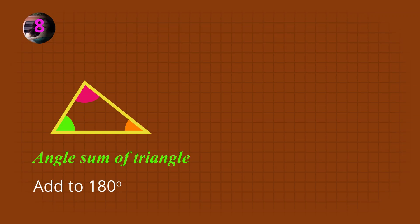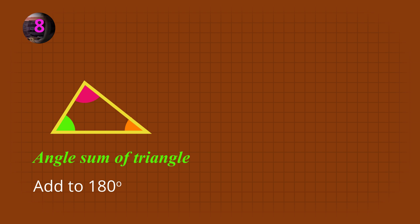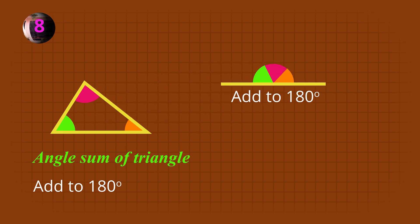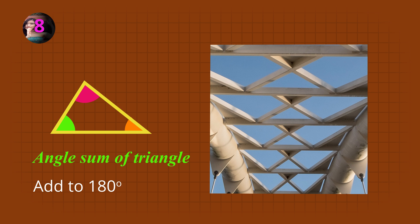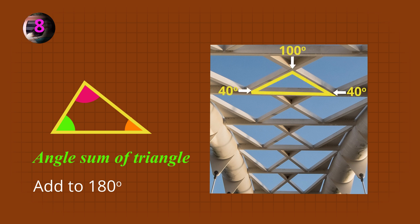The three angles of any triangle add to 180 degrees. Because the word sum means addition, we say that the angle sum of a triangle is 180 degrees. The angles of this bridge structure add up to 180 degrees.